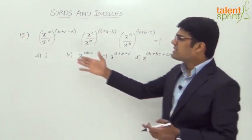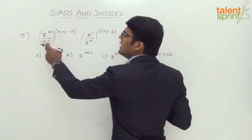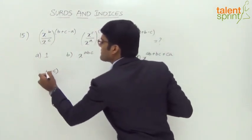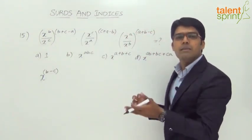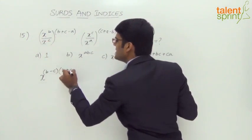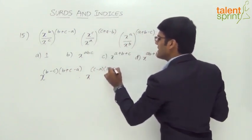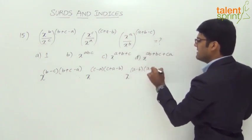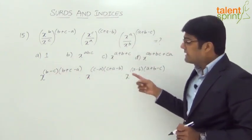Going by the traditional method, we apply the laws of surds and indices. x^b divided by x^c — the bases are equal and in division form, so the powers are subtracted. This becomes x^(b−c), whole to the power of (b+c−a). Using the law a^m raised to n equals a^(mn), we get (b−c)(b+c−a) for the first term, (c−a)(c+a−b) for the second, and (a−b)(a+b−c) for the third.